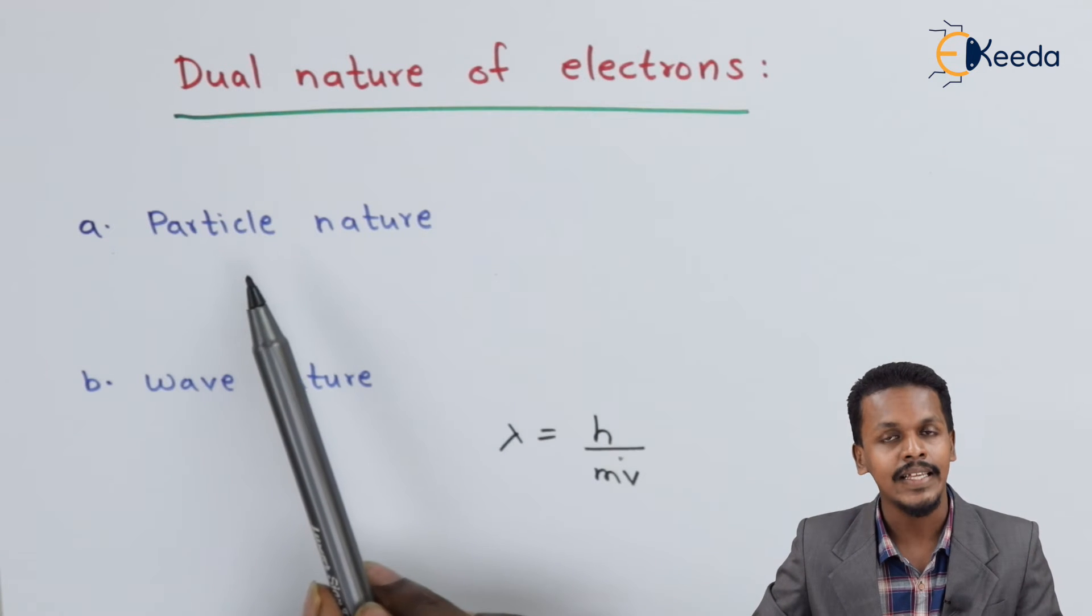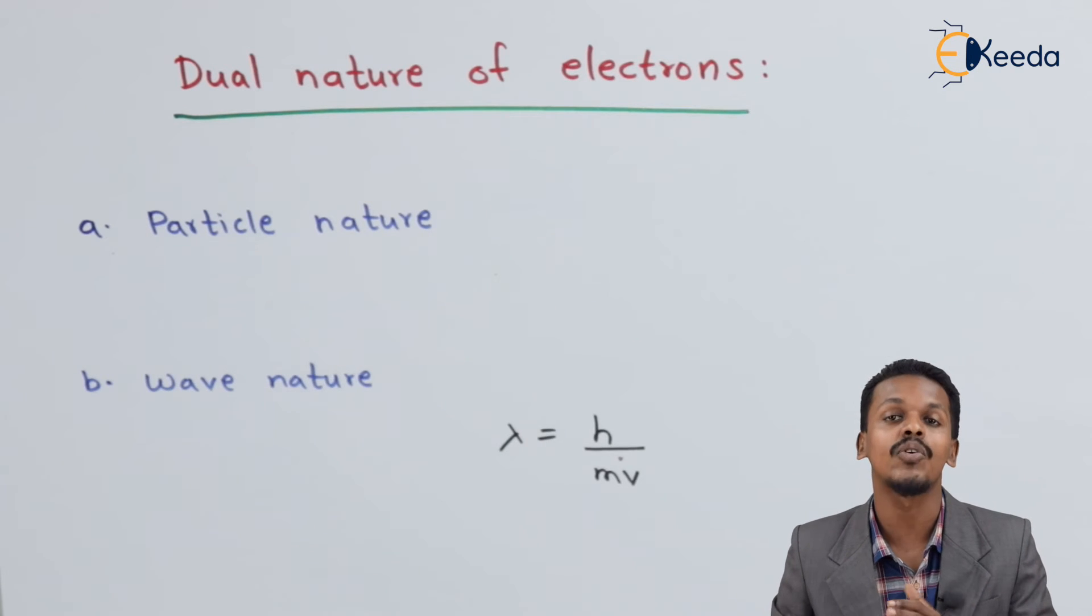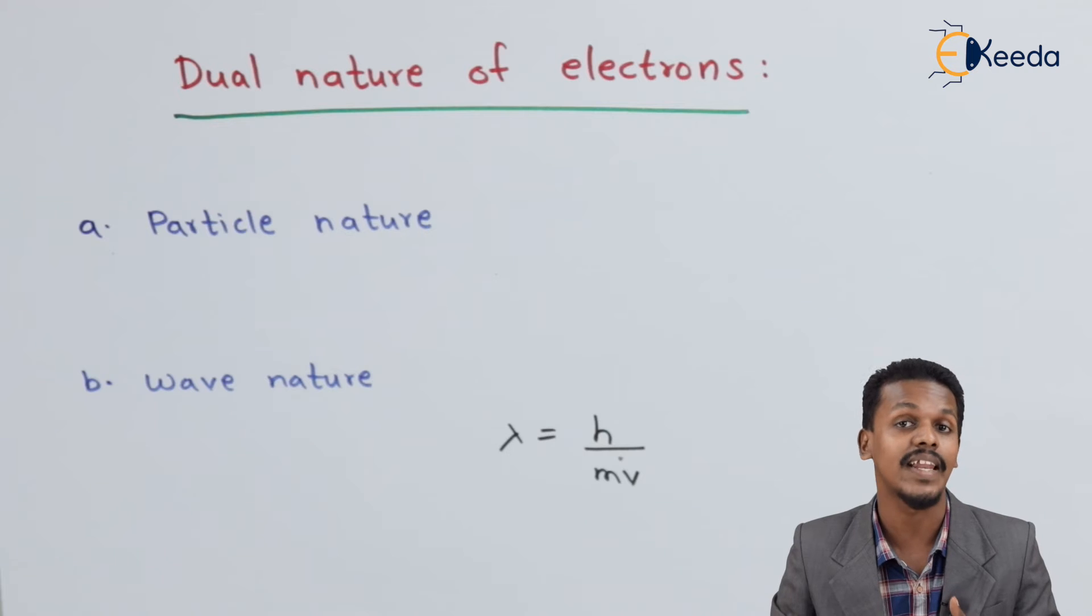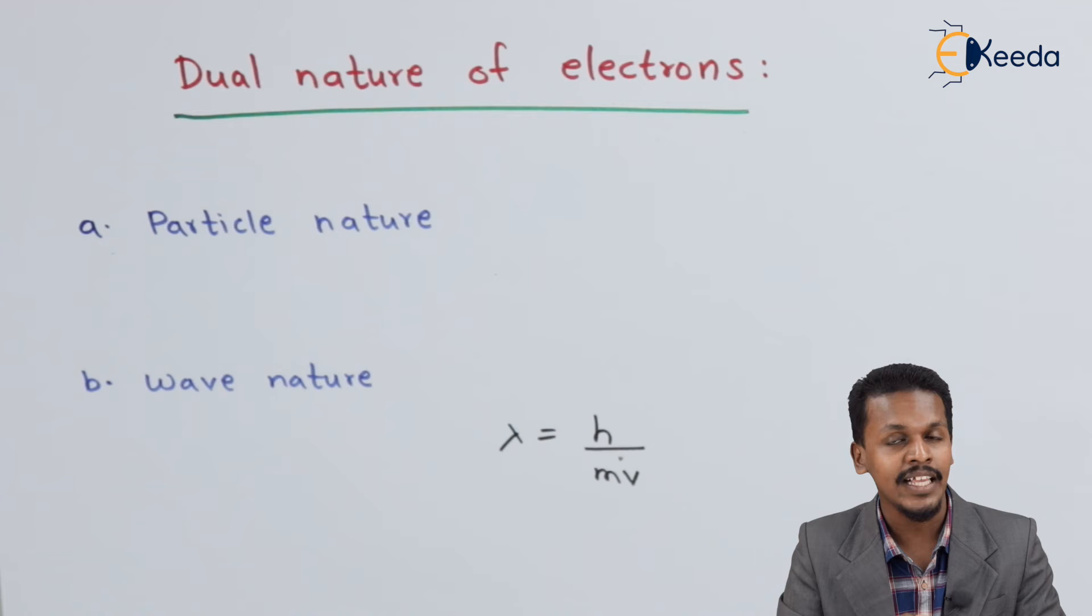As well as we also know the particle nature of the electron. So this indicates that electron can behave like a particle as well as a wave. Based on what is de Broglie equation, I am going to talk about in the next topic.